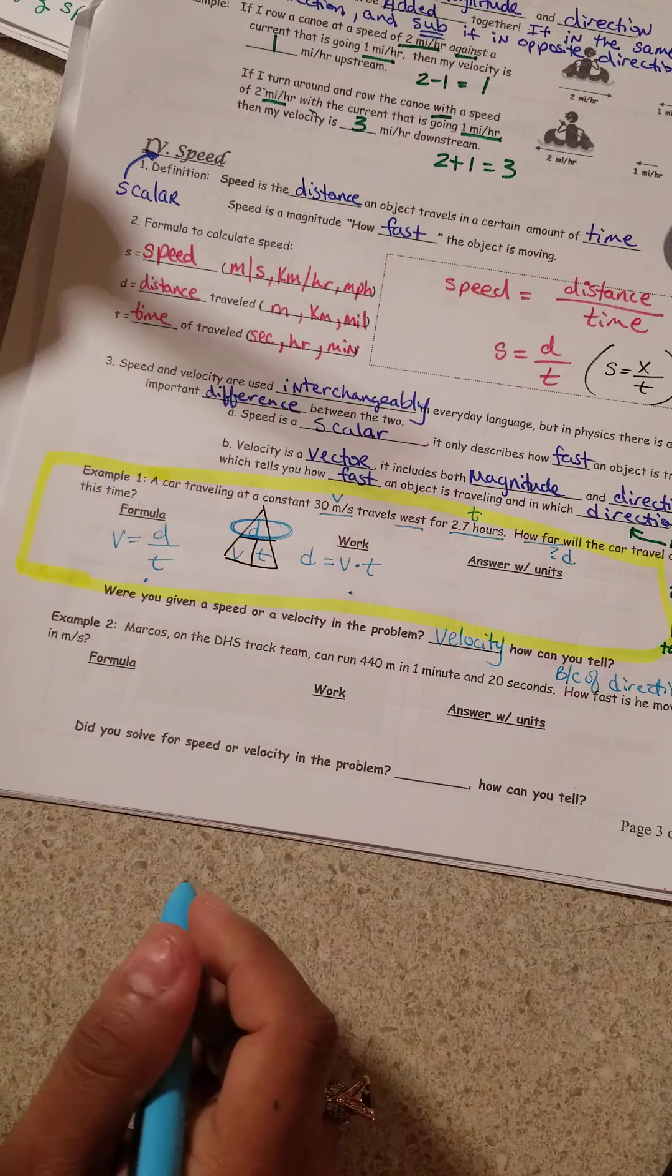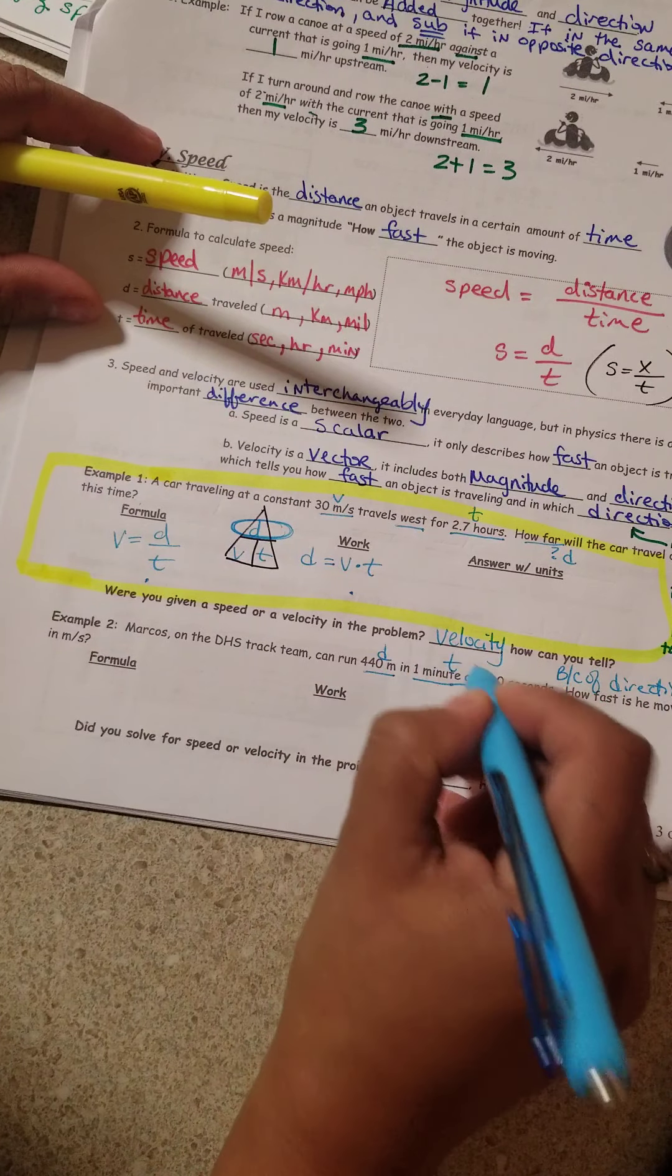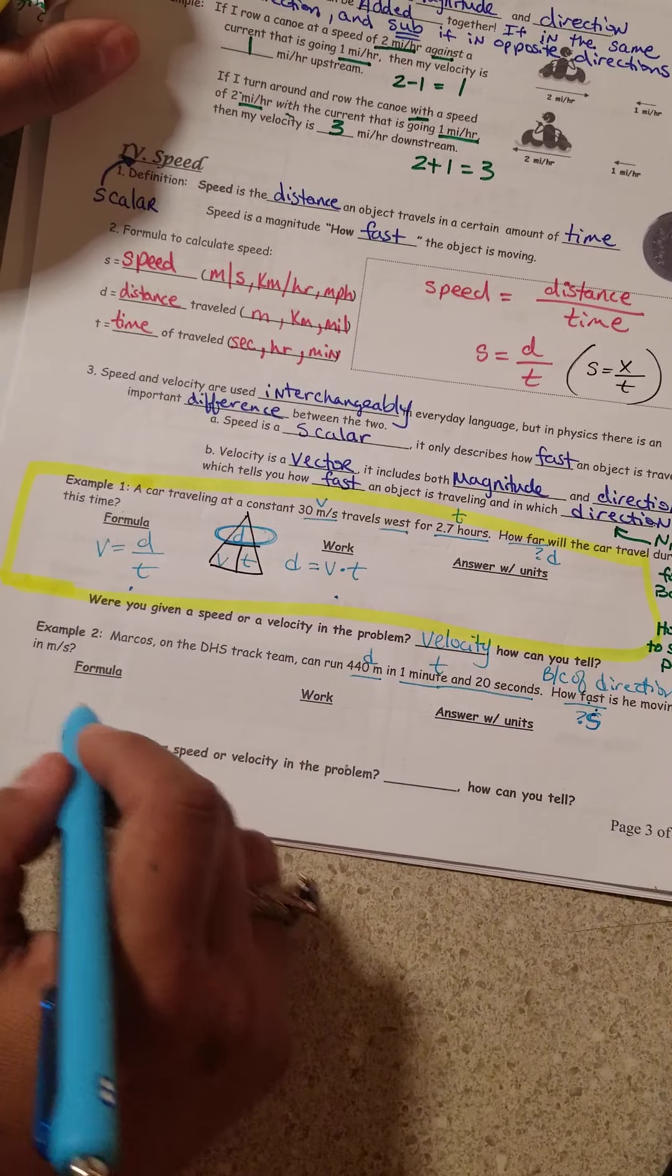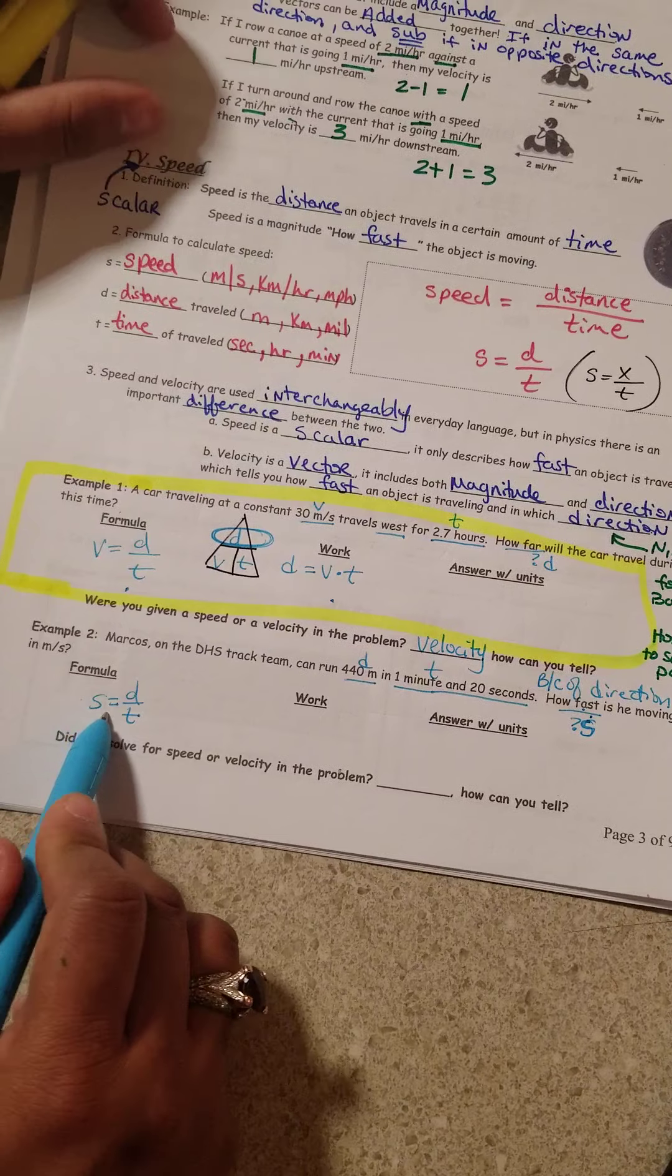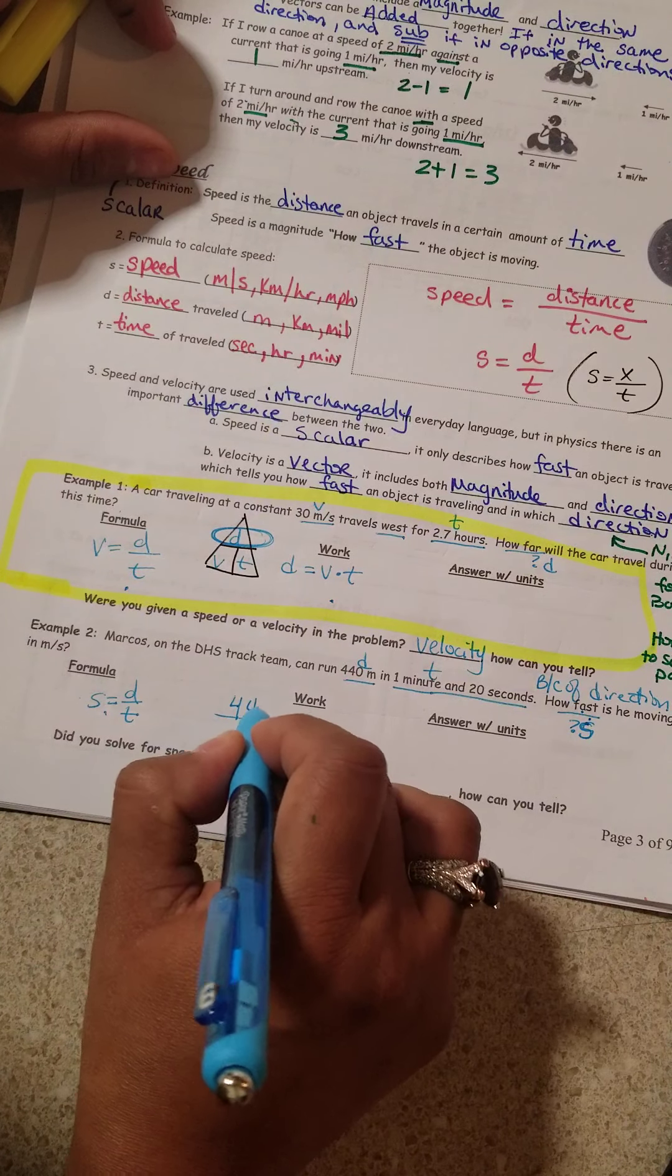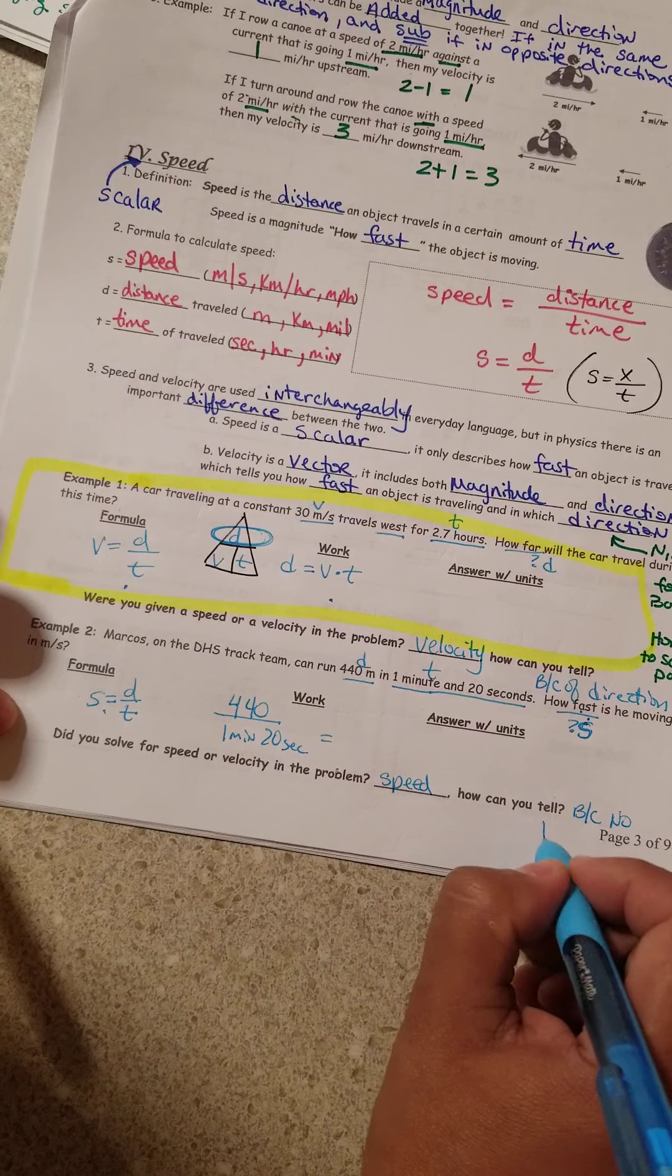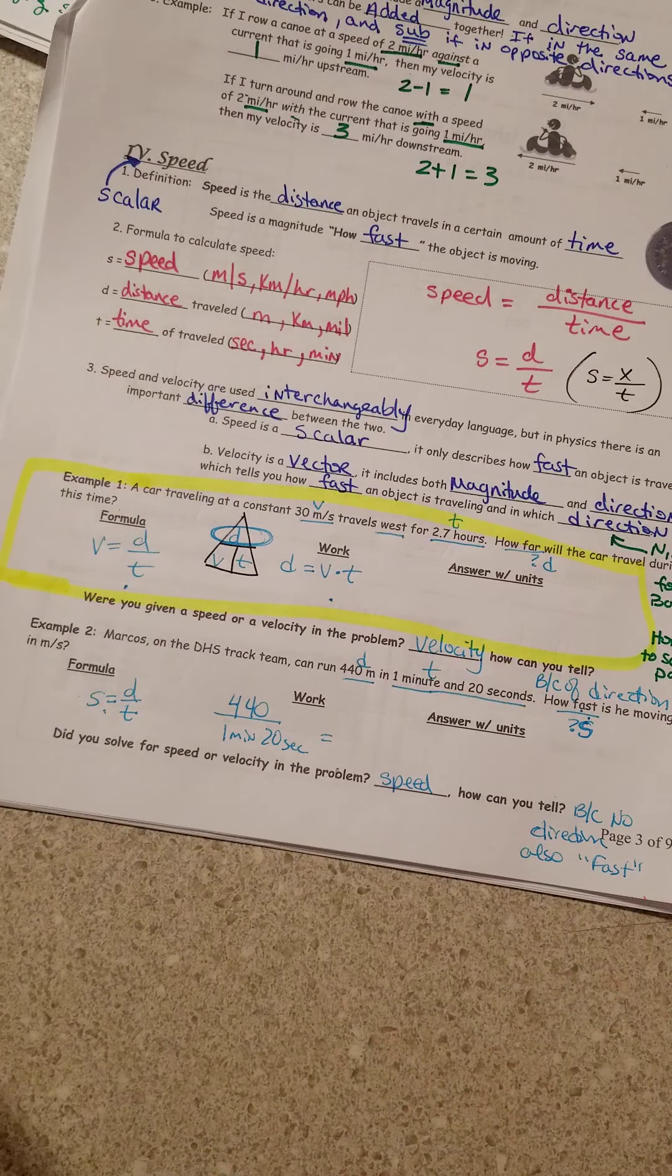Next part, Marcos is on the DHS track team. He can run 440 meters in 1 minute and 20 seconds. Distance. T for time. How fast? Question mark. Did they give us any kind of directions? No. I'm going to call it speed. How fast? And they use the words fast, too. Is he moving in meters per second? So, speed equals d over t. I'm actually looking for speed, so I don't have to rearrange the equation. Go ahead and put the distance over the time. And solve for your answer. What kind of problem did you get? It was a speed problem. How can you tell? Because no direction. Also, they just wanted to know how fast.